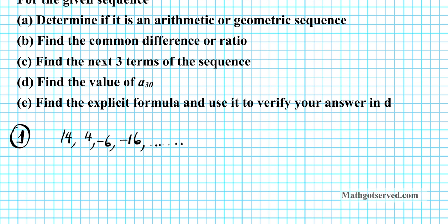The difference between sequence and series is the elements of the terms in a sequence are separated by commas, whereas in a series you have plus or minuses between them. Think of a sequence as just a list of numbers, whereas a series represents a sum of numbers.